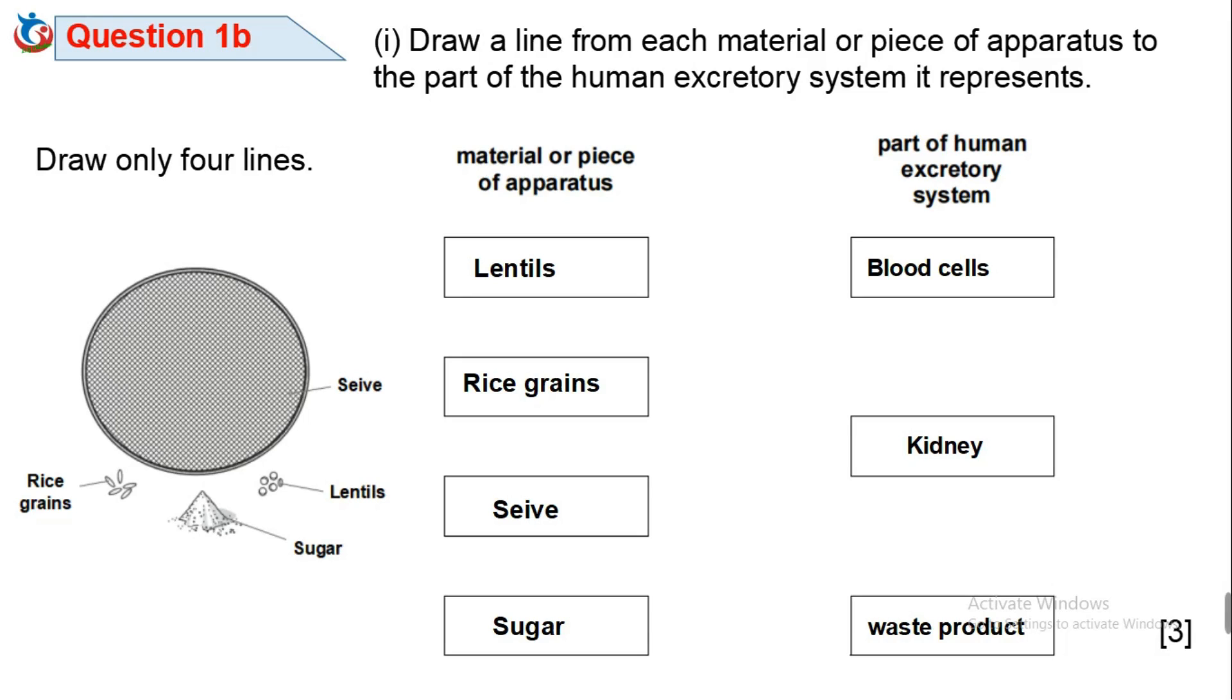We've learned that kidneys filter the blood. Large molecules like blood cells and large proteins cannot pass through the membrane of kidney. While other molecules like sugar, glucose, urea, ammonia can pass through.